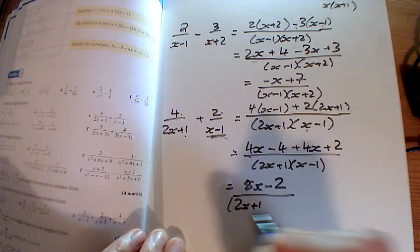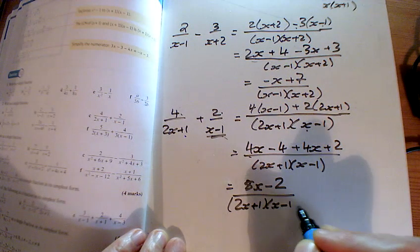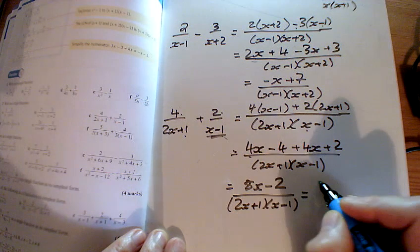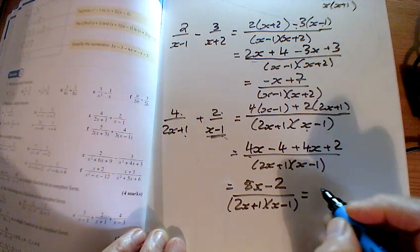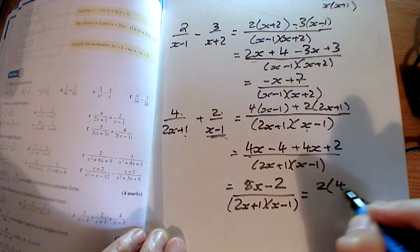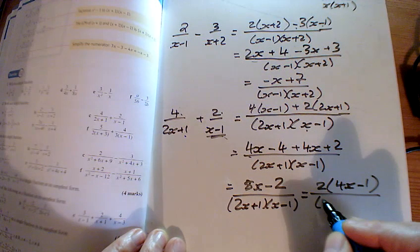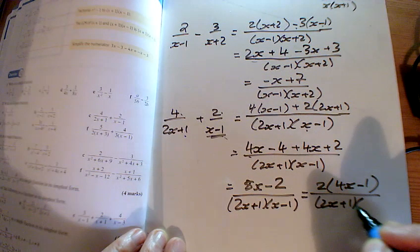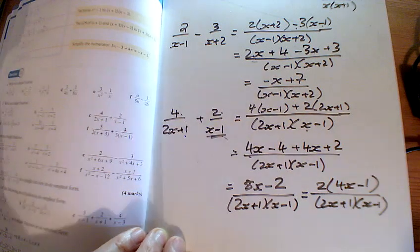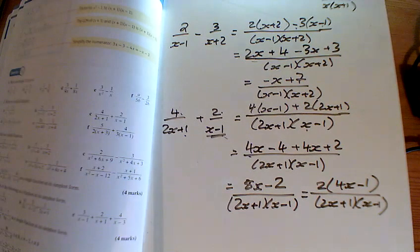And I might even do another line here again. That 8x minus 2, it's got a factor of 4 there, isn't it? No, sorry, a factor of 2 there. It's got 2 lots of 4x take away 1. And the reason for doing that is, on occasions, that might end up cancelling with one of the things you've got on the bottom. So it's always worth doing that too.